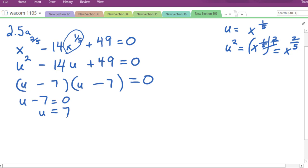So u equals 7. Now you cannot stop there because you have solved for u. You want to solve for x. So you have to substitute back. You said that u equals x to the 1 fifth. So you have to replace the u with x to the 1 fifth equals 7.